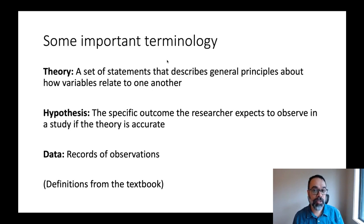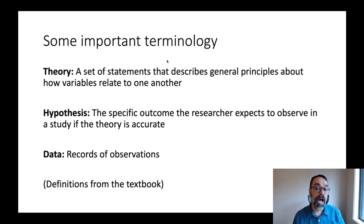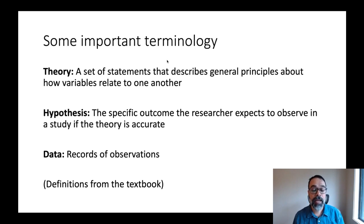First, what is a theory? There are different definitions, but one good one from your textbook is: a theory is a set of statements that describe general principles about how variables relate to each other. So a theory is just a set of statements about nature, about how things work. A hypothesis is a specific outcome that a researcher expects to observe in a study if the theory is accurate. And then data are records of observations.